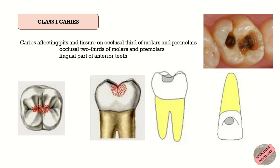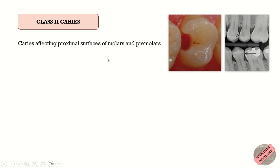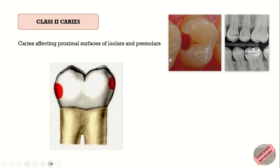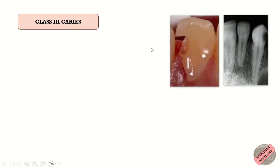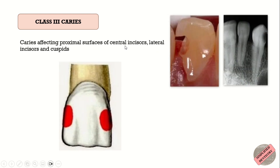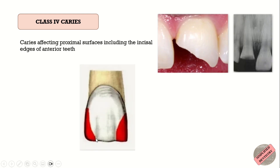Class 2 caries affects the proximal surface of molars and premolars, so it basically involves the proximal surface of the posterior teeth. Class 3 caries affects the proximal surface of central incisors, lateral incisors, and cuspids — that is, the proximal surface of anterior teeth. Class 4 caries affects the proximal surface including the incisal edges of anterior teeth. So Class 4 is similar to Class 3, except that the incisal edges are also included.